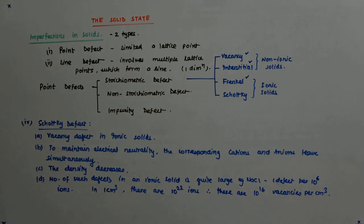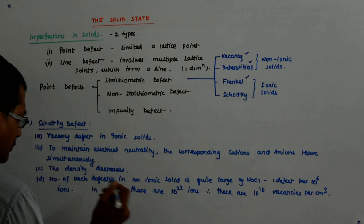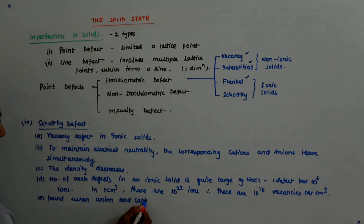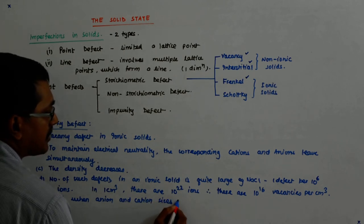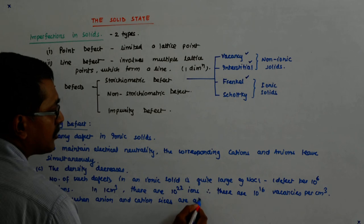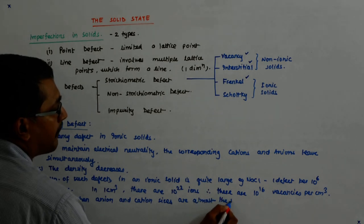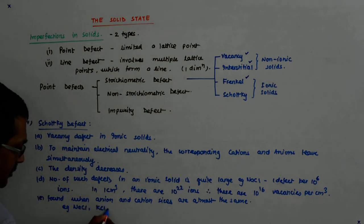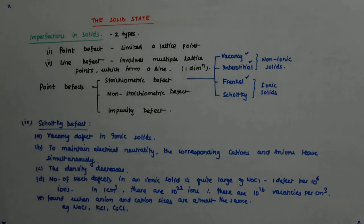So this is found in, normally found when anion and cation sizes are almost the same. Example: NaCl, KCl potassium chloride, cesium chloride, silver bromide.